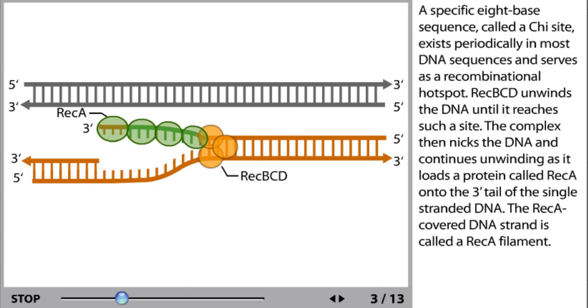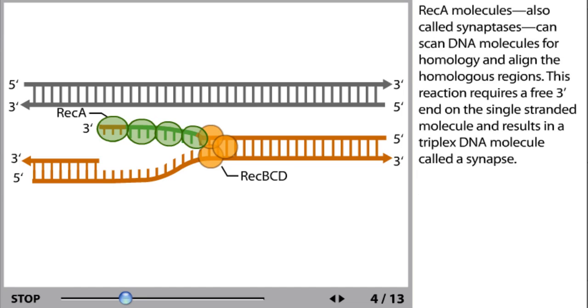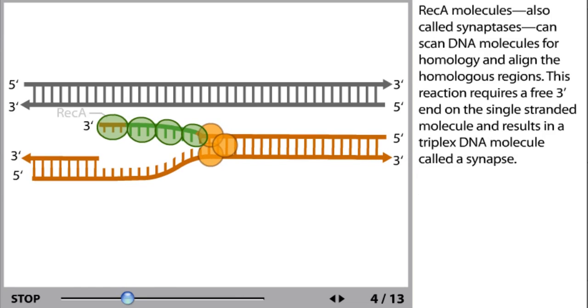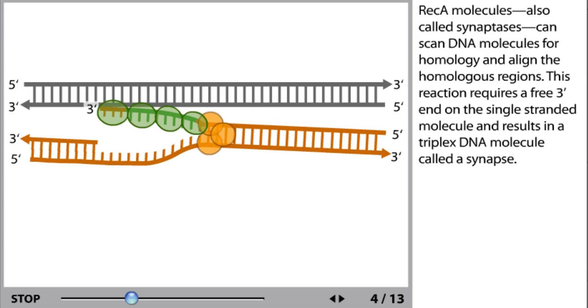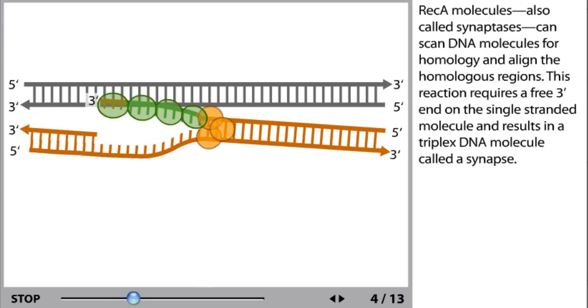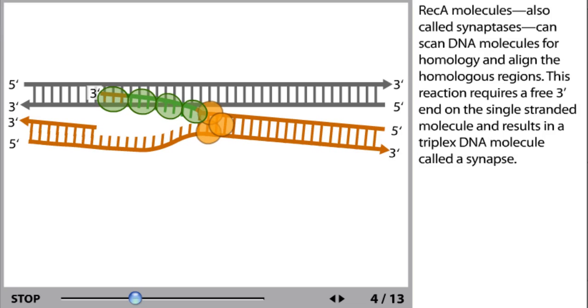The RecA covered DNA strand is called a RecA filament. RecA molecules, also called synaptases, can scan DNA molecules for homology and align the homologous regions. This reaction requires a free three-prime end on the single-stranded molecule and results in a triplex DNA molecule called a synapse.